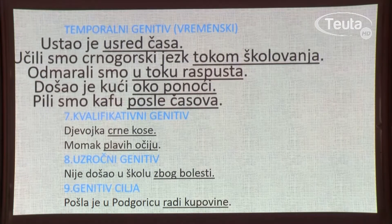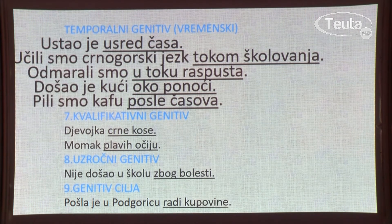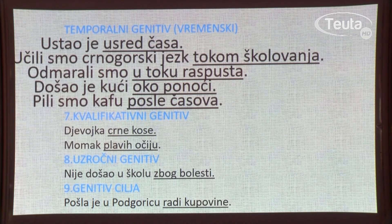Temporalni genitiv ili vremenski — odredba za vrijeme, kada? Ustao je usred časa — čega? Časa. Učili smo crnogorski jezik tokom školovanja — na pitanje kada, za vremensku odredbu, tokom školovanja, čega? Školovanja. Odmarali smo u toku raspusta. Došao je kući oko ponoći. Pili smo kafu poslije časova.